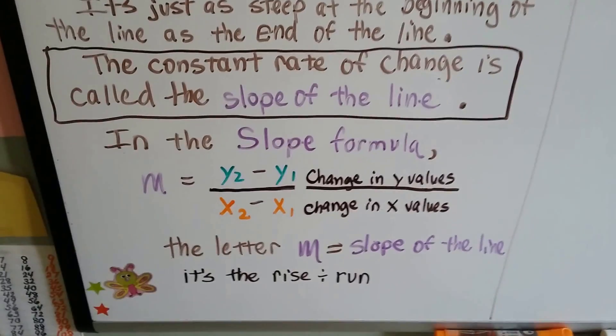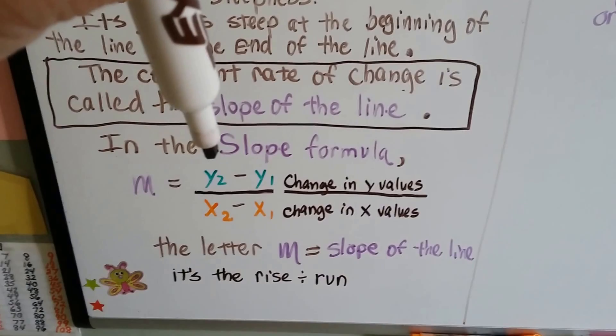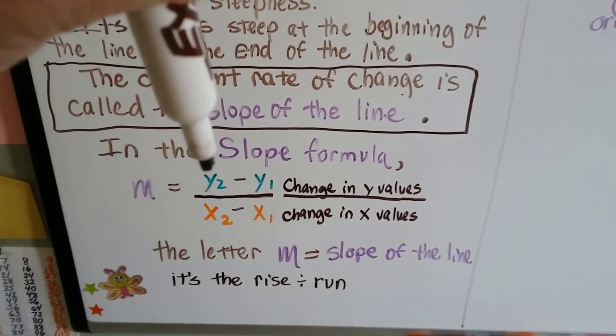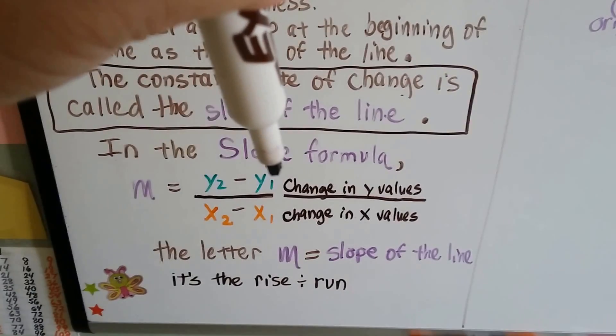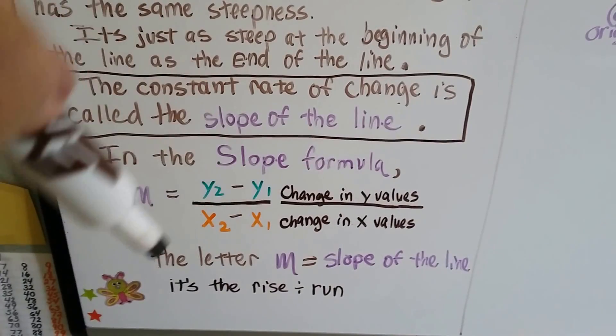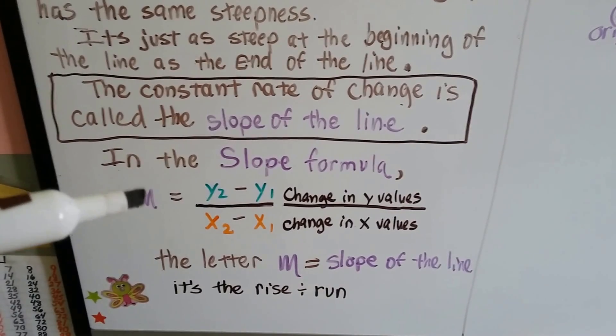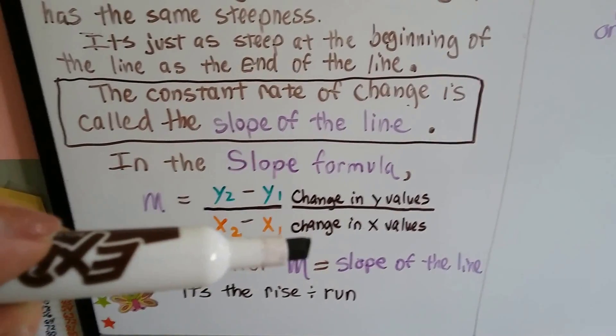In the slope formula, m is equal to the change in y values from y2 to y1 over the change in x values, x2 to x1. And this letter m stands for the slope of the line. It's the rise over the run of the line. I'll show you.